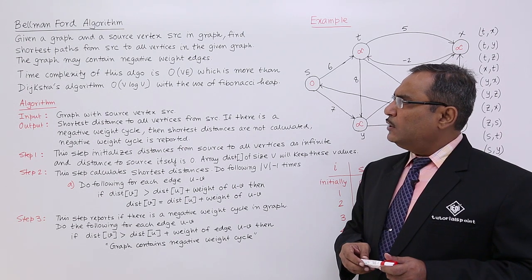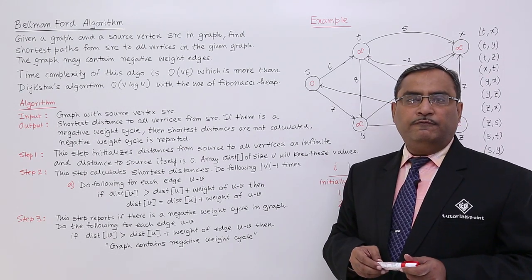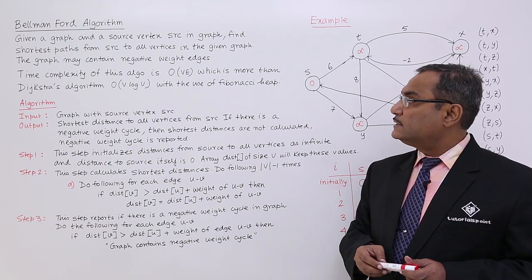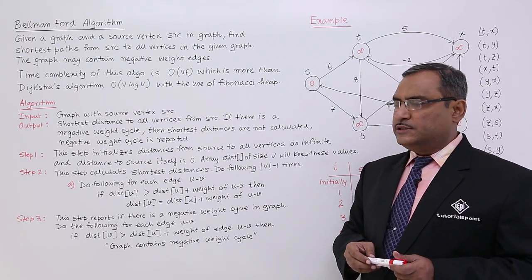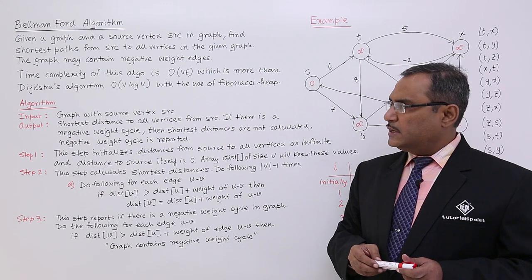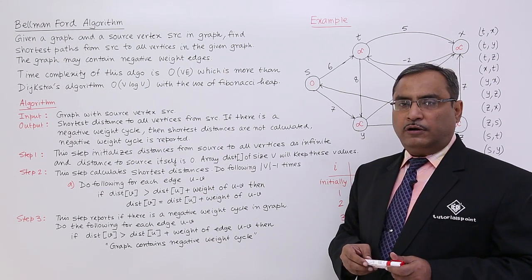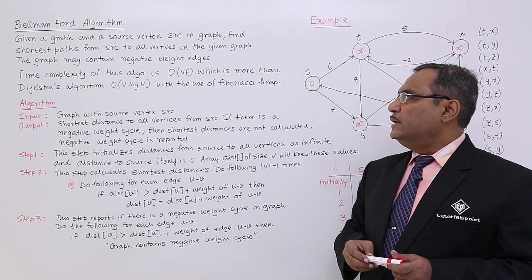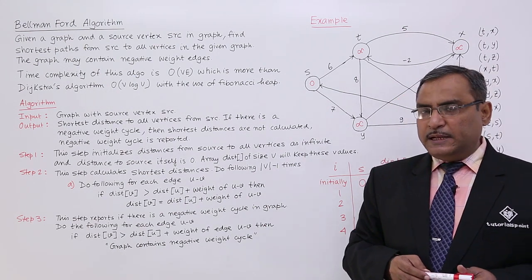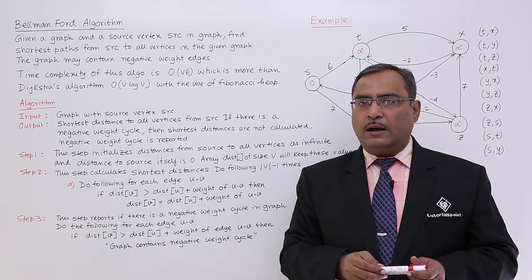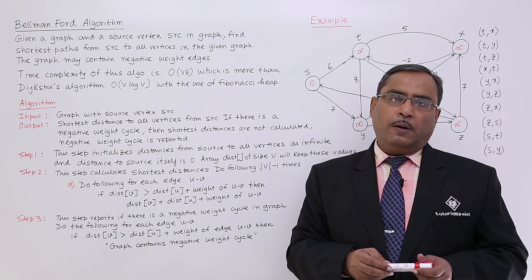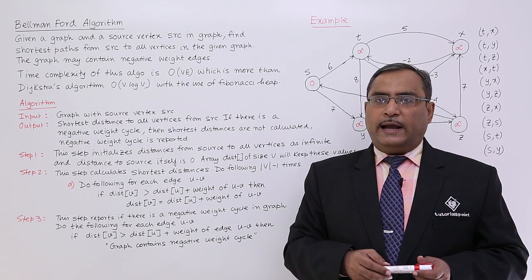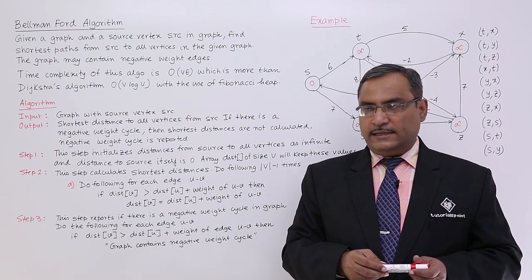The complexity of this algorithm is of the order O(V·E), where V is the number of vertices and E is the number of edges. This is more than Dijkstra's algorithm, which has complexity O(V log V) with the use of a Fibonacci heap. That means Bellman-Ford has higher complexity than Dijkstra's, but it can handle negative weight edges.